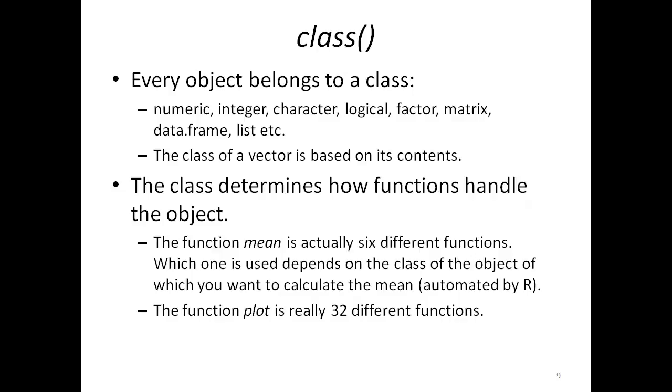For example, the mean function, which calculates the arithmetic mean of the data you provide it with, is actually six different functions. But they are all called mean, and depending on what class the object you try to get a mean of, it calls for one of these six functions and gives you the mean.